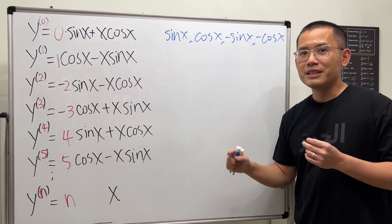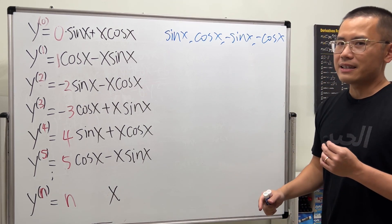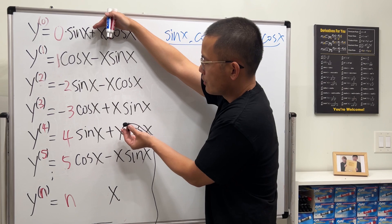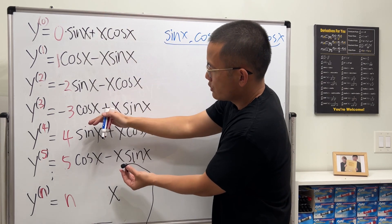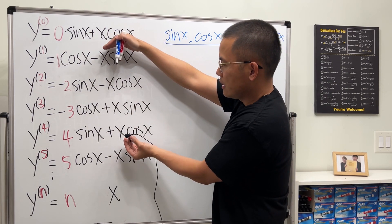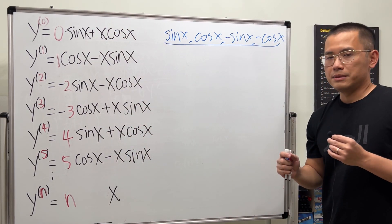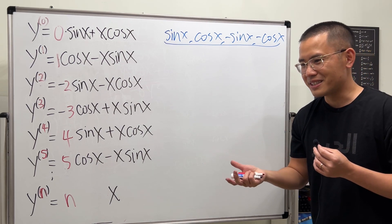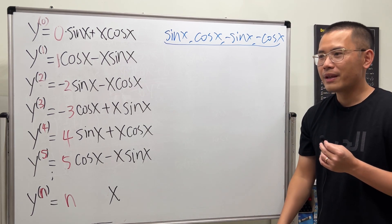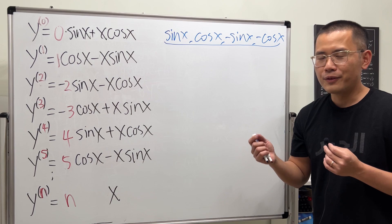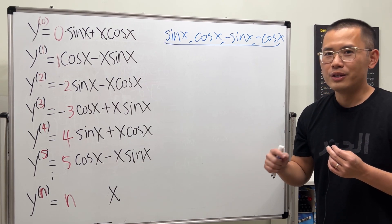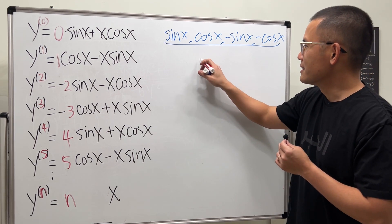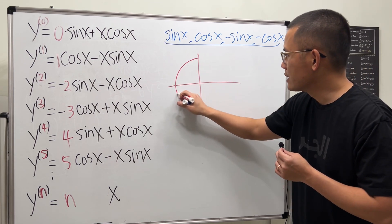This pattern repeats every four steps — from index 0 to 3, then it repeats as a block. To write a formula, we can use sine and cosine again. Think of it as going around the unit circle: two pi radians divided by four gives pi over two, cutting the circle into four pieces.